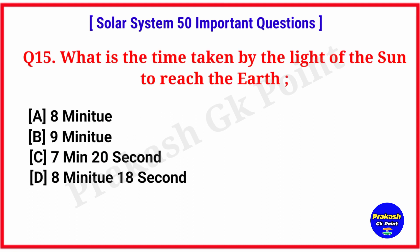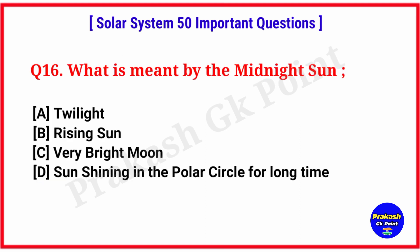What is the time taken by the light of the sun to reach the Earth? Answer: option D, 8 minutes 18 seconds. What is meant by the midnight sun? Answer: option D, the sun shining in the polar region for a long time.